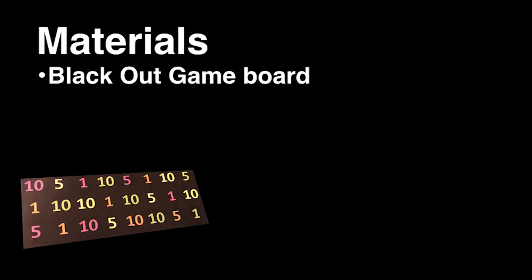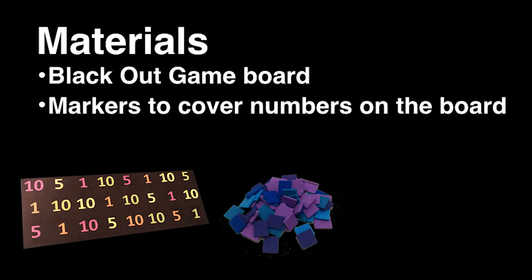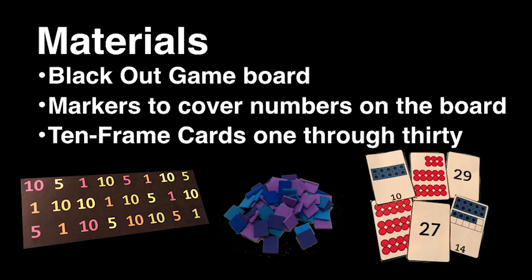First you will need to set up the game board and pieces. Cut out the ten frame cards which are numbered 1 through 30. The cards are placed face down in the middle of the playing surface. Each player chooses a game board and a handful of markers.